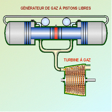A free piston engine is a linear, crankless, internal combustion engine in which the piston motion is not controlled by a crankshaft but determined by the interaction of forces from the combustion chamber gases, a rebound device (e.g., a piston in a closed cylinder) and a load device (e.g., a gas compressor or a linear alternator).